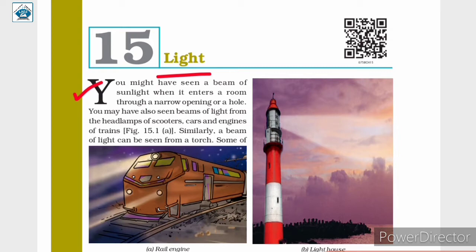You might have seen a beam of sunlight when it enters a room through a narrow opening or a hole. You may have also seen beams of light from the headlamps of scooters, cars and engines of trains.